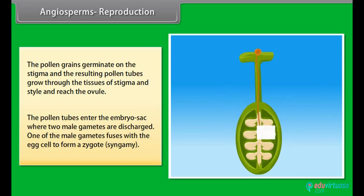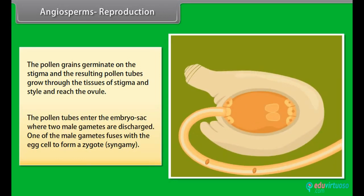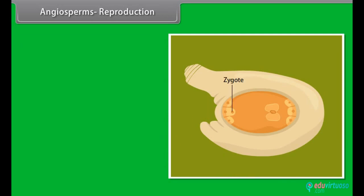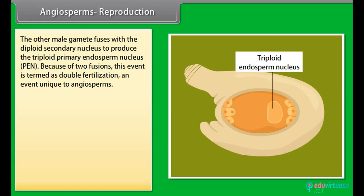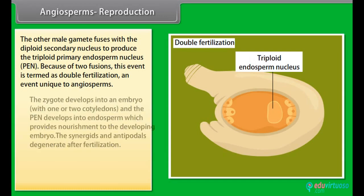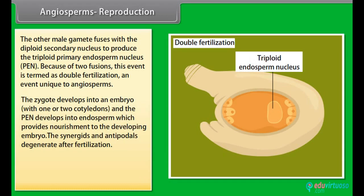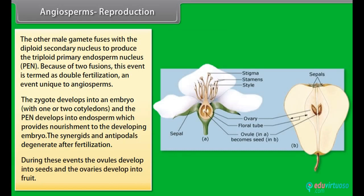The pollen grains germinate on the stigma and the resulting pollen tubes grow through the tissues of stigma and style and reach the ovule. The pollen tubes enter the embryo sac where two male gametes are discharged. One of the male gametes fuses with the egg cell to form a zygote — syngamy. The other male gamete fuses with the diploid secondary nucleus to produce the triploid primary endosperm nucleus (PEN). Because of these two fusions, this event is termed double fertilization, an event unique to angiosperms. The zygote develops into an embryo with one or two cotyledons, and the PEN develops into endosperm which provides nourishment to the developing embryo. The synergids and antipodals degenerate after fertilization. During these events, the ovules develop into seeds and the ovaries develop into fruit.